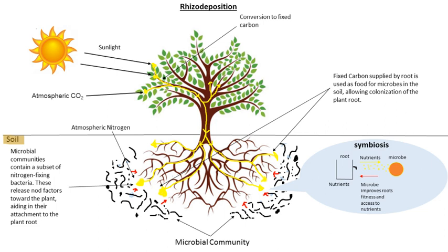Most likely, both natural selection and neutral processes affect microbial community assembly, though certain microbial taxa may be more restricted by one process or the other depending on their physiological restrictions and mode of dispersion. Microbial dispersal mechanisms include wind, water, and hitchhiking on more mobile microbes. Microbial dispersion is difficult to study, and little is known about its effect on microbial community assembly relative to the effect of abiotic and biotic assembly mechanisms, particularly in roots. For this reason, only assembly mechanisms that fit within the niche hypothesis are discussed below.